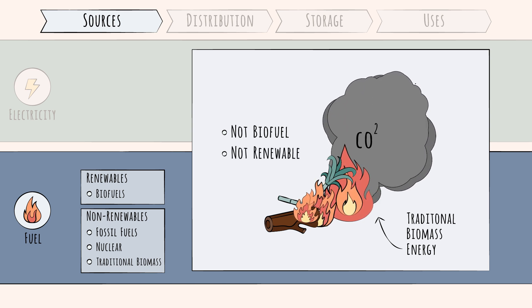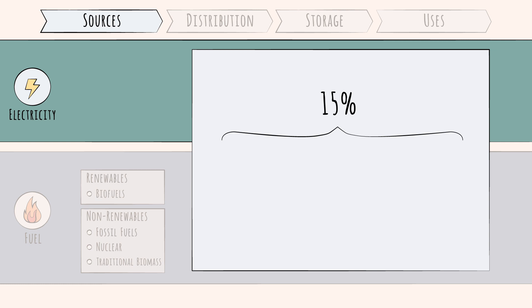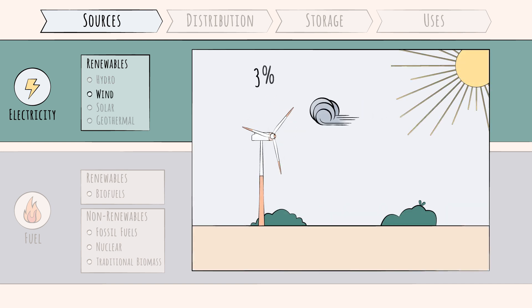The remaining 10 to 15 percent of our energy comes from electricity-based sources. These are the core renewables: hydropower, meaning dams, wind, solar, and geothermal. Hydropower is the largest of these, accounting for five to six percent of global energy. Wind accounts for roughly three percent, and solar slightly less, around two percent.